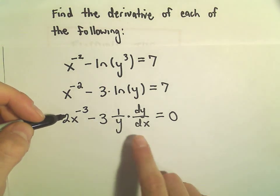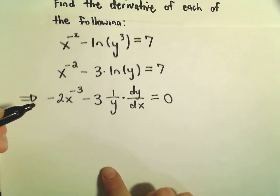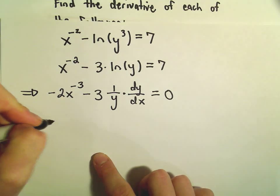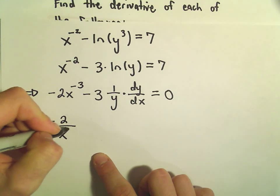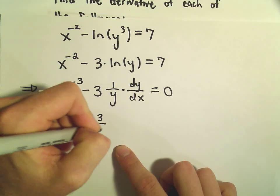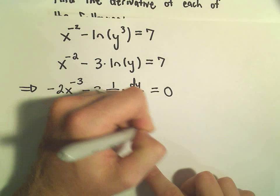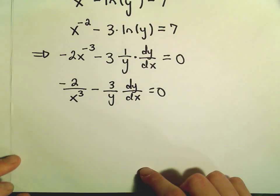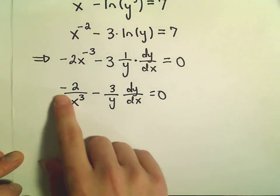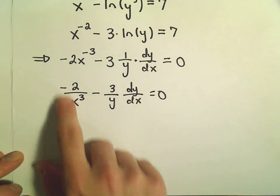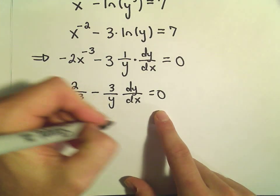So, now all we have to do is just solve for dy dx. I think I'm going to do one thing first. I'm going to write this as negative 2 over x to the third minus 3 over y dy over dx equals 0. And what we can do at this point is add the negative 2 over x to the third. We'll add 2 over x to the third to both sides.